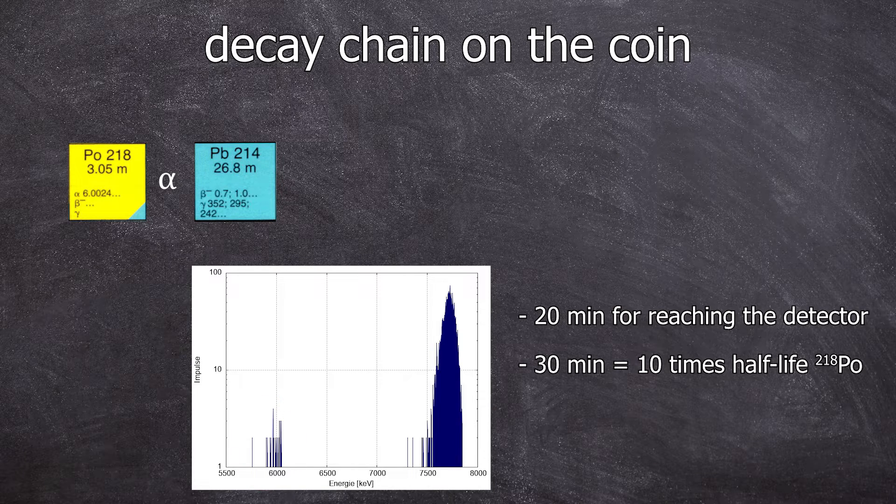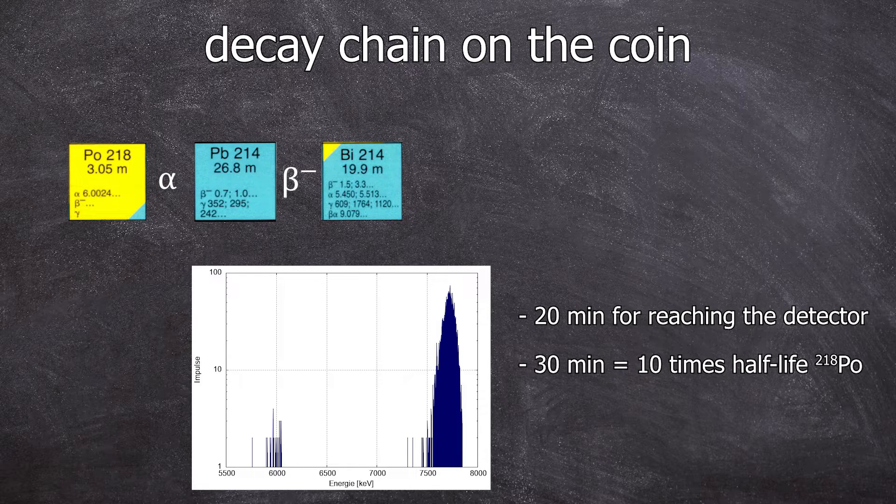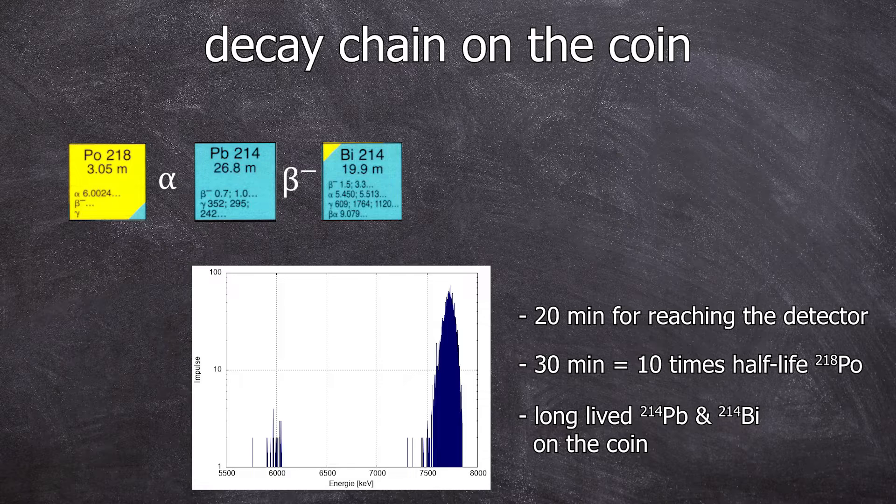The formed lead 214 decays with a half-life of 26 minutes into bismuth 214, which also has a half-life of 20 minutes. These two longer-lived radionuclides are still in larger quantities due to the decay of polonium during the transportation on the coin.